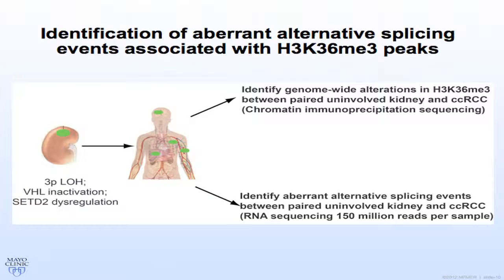To further test this idea, I looked at patient tissue. At Mayo Clinic, we're actively genotyping patients as they go through the clinic. We identified a patient with a SETD2 mutation, and as an additional control I stained the whole tissue for histone 3-lysine 36 trimethylation to confirm the decrease in this histone modification — giving us both the genotype and the epigenetic phenotype. The first goal was to look at genome-wide alterations of H3K36me3 between paired uninvolved kidney and a SETD2 mutant renal cell carcinoma tumor.